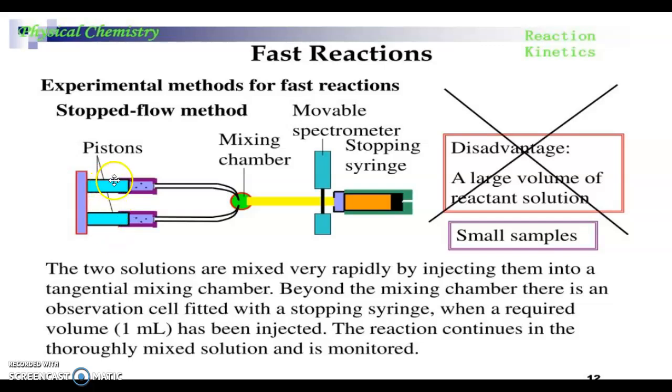We have two pistons in which the reactants are added. This is the mixing chamber at which the reactants are mixed. These are the spectrophotometers which will record the readings, and this is a stopping syringe which stops the movement of reactants at a particular volume.